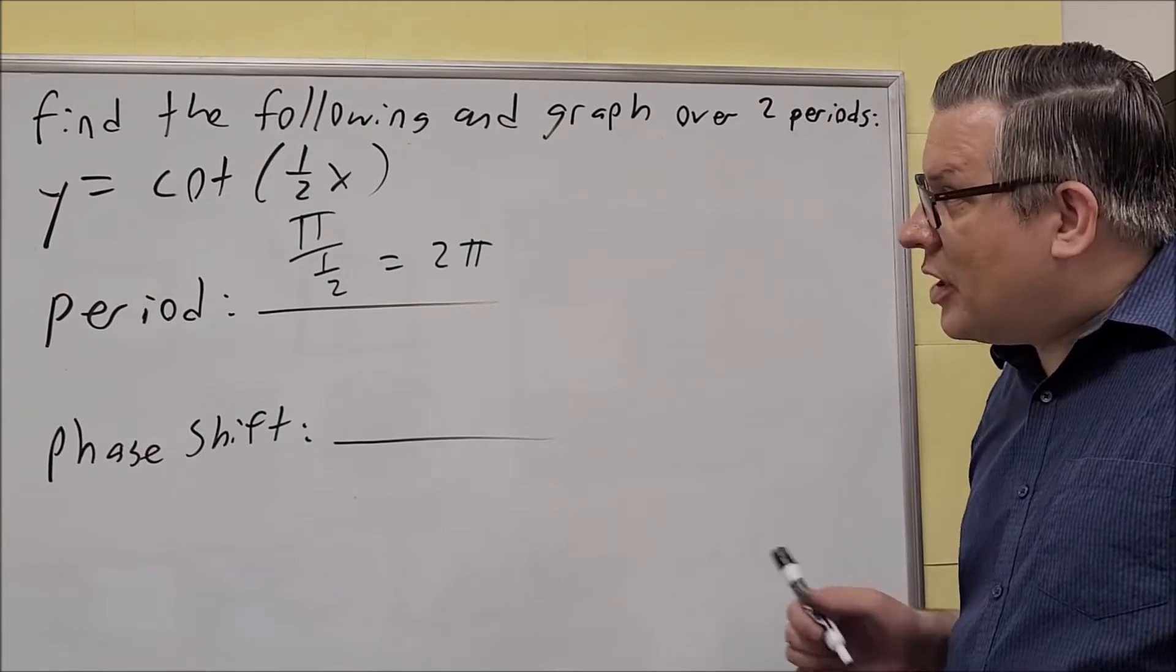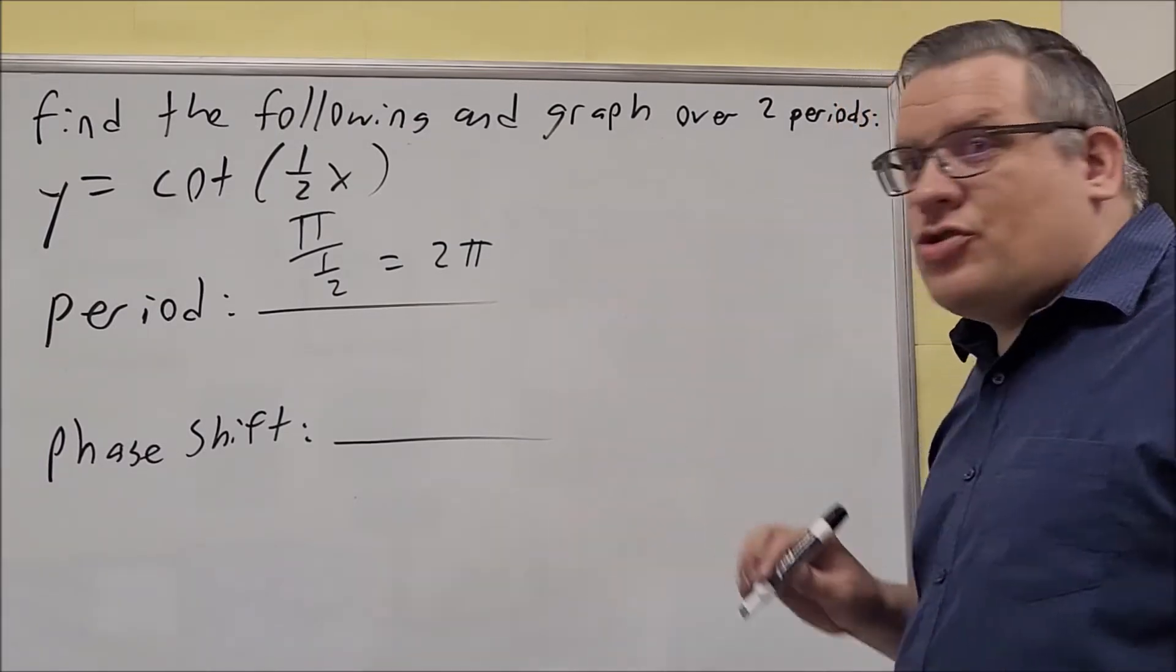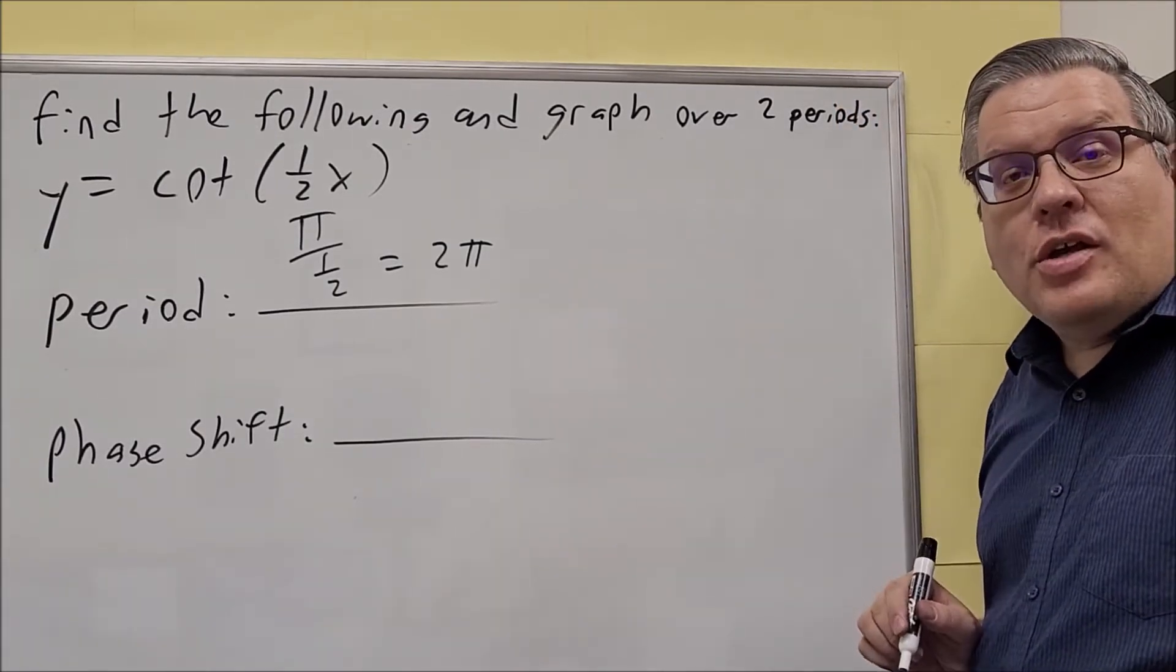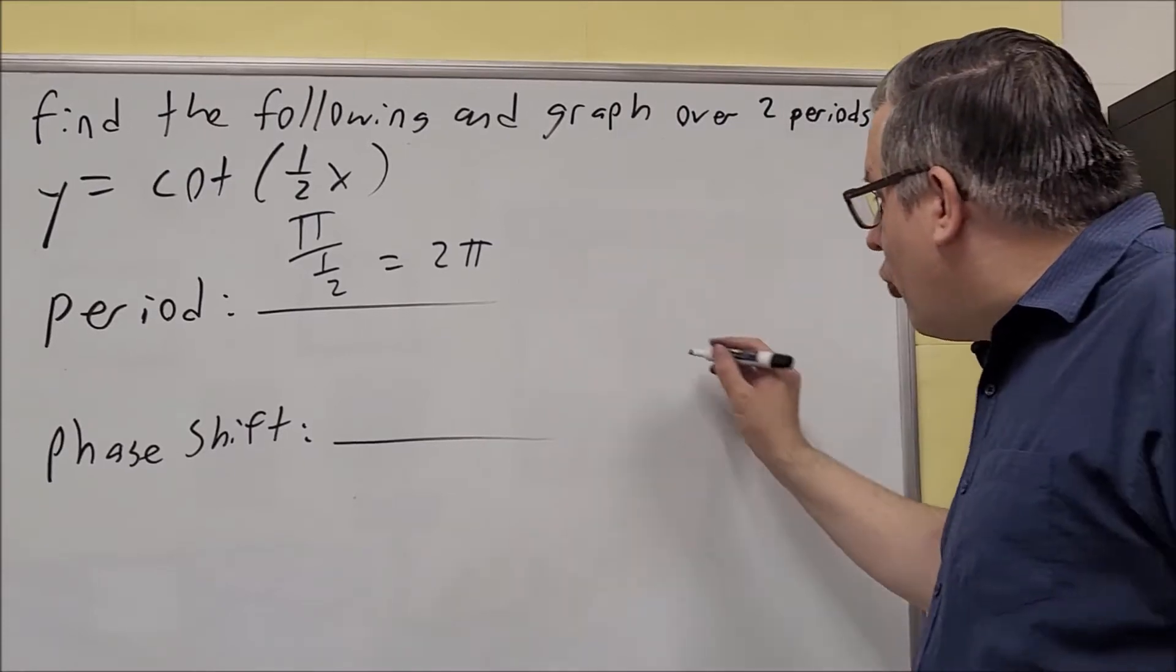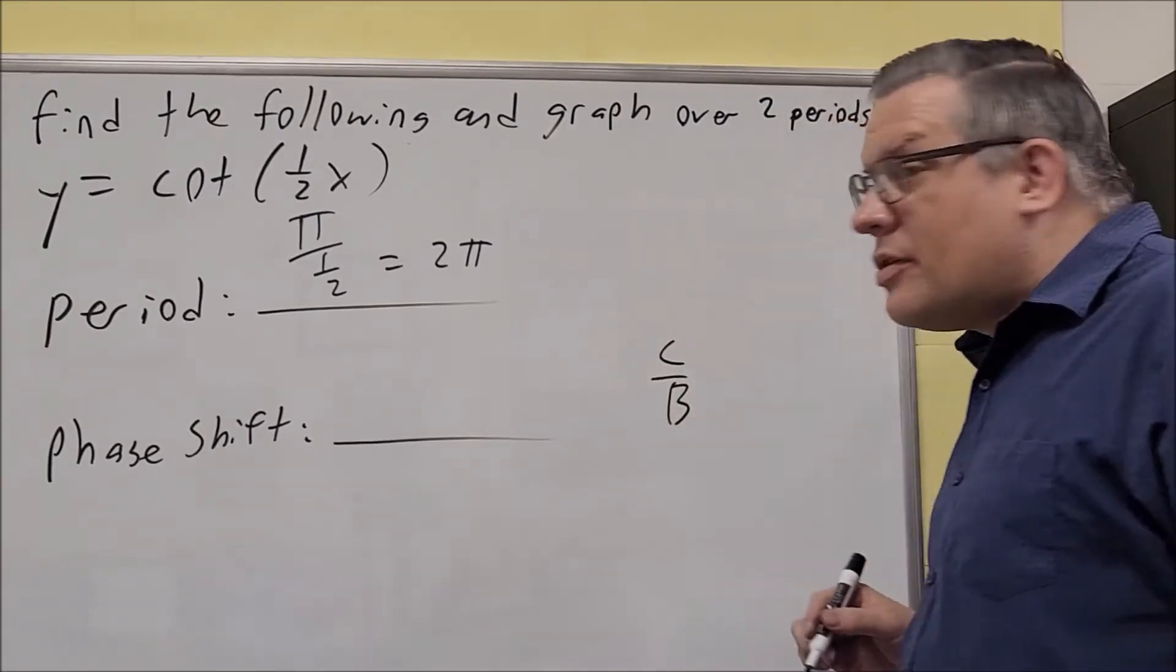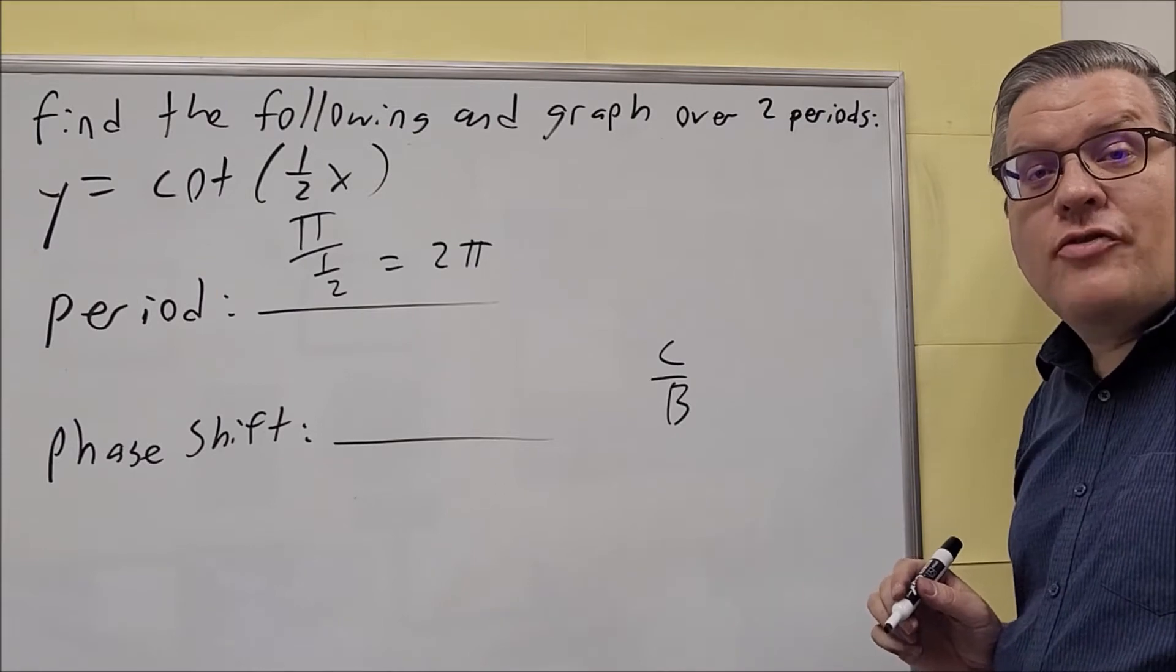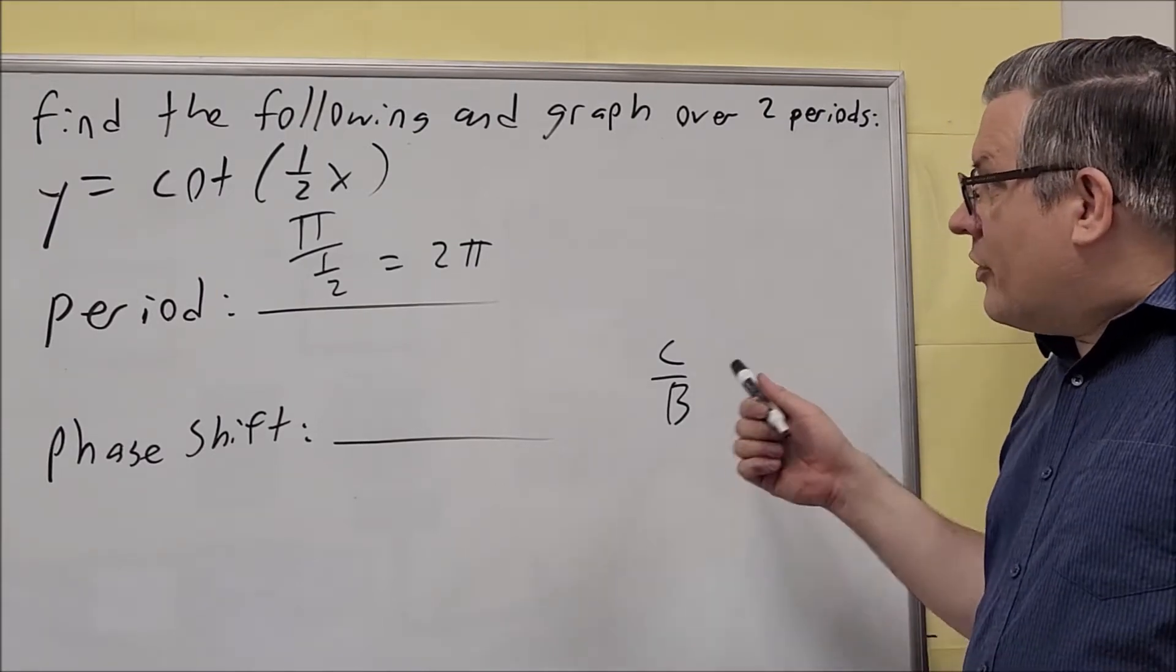For the phase shift, because it's a cotangent graph, it's just going to be c over b only in this case. So the formula here is c over b. We don't have that minus part afterwards because that's only for tangent graphs.